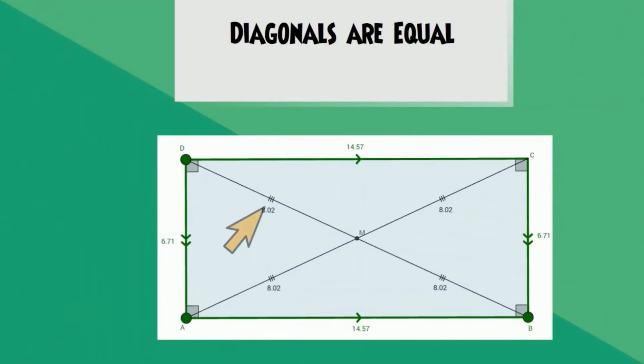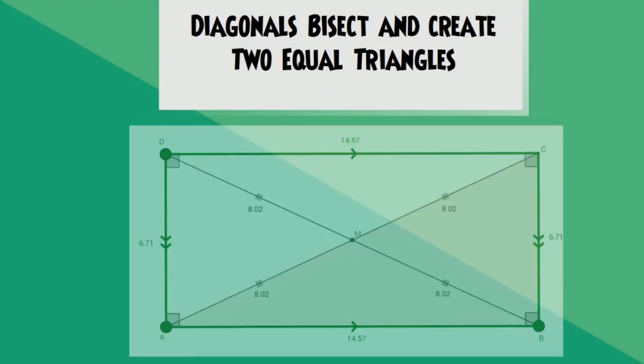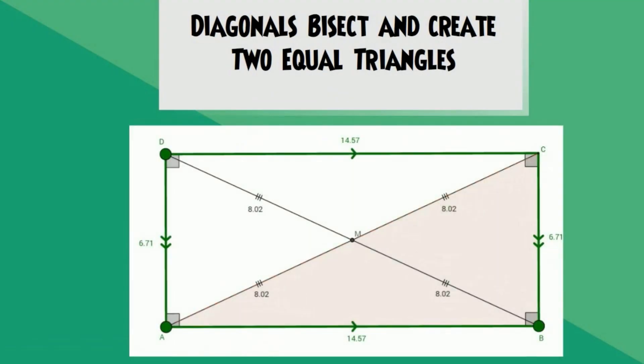Let's talk about the diagonals of a rectangle. The diagonals of a rectangle are of equal length. The diagonals also bisect and create two pairs of equal triangles.